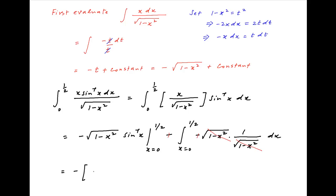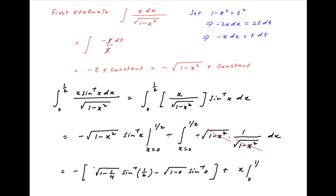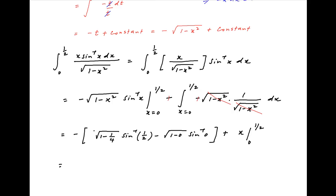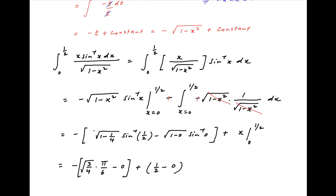The integrand in the second term simplifies. Putting in the limits in the first term, we get minus square root of 1 minus 1/4 times sin inverse 1/2, minus square root of 1 minus 0 times sin inverse 0. The second term becomes the integral of x between the limits 0 and 1/2. The first term simplifies to minus square root of 3/4 times sin inverse 1/2, which equals pi/6, and the second term equals 1/2 minus 0.